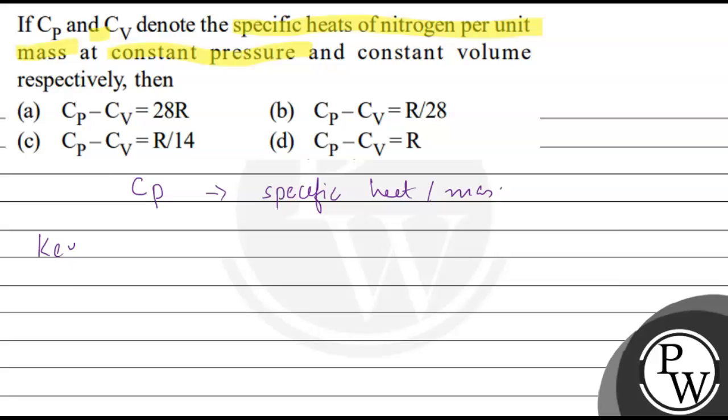Let's discuss key concepts. From Mayer's relation, Cp minus Cv is equal to R, but this Cp minus Cv is a molar specific heat per unit mole.